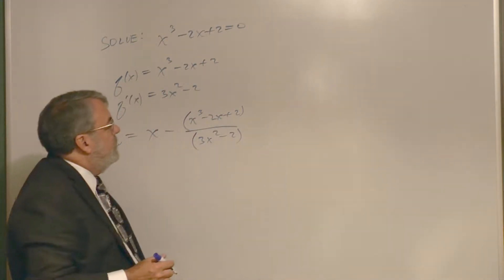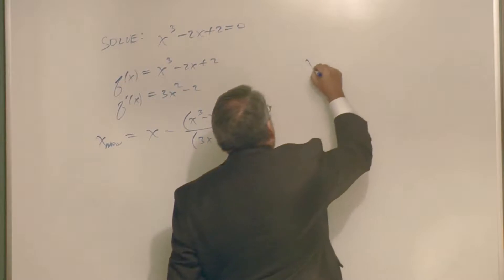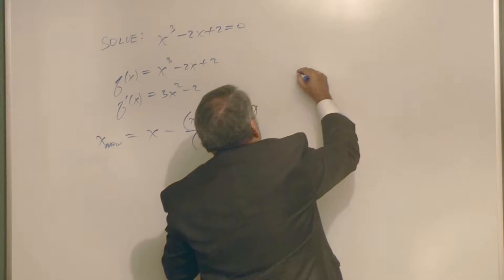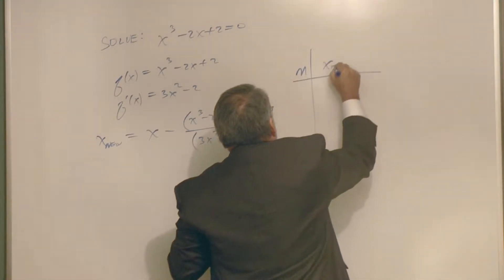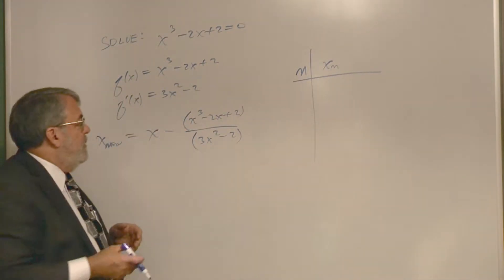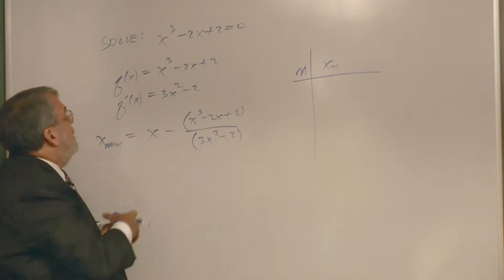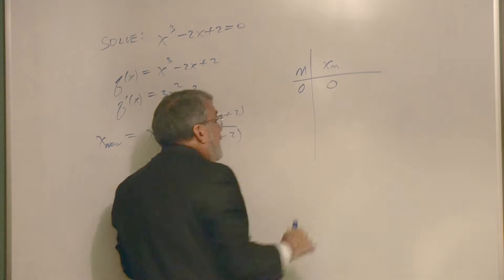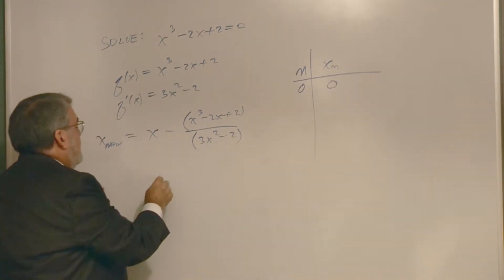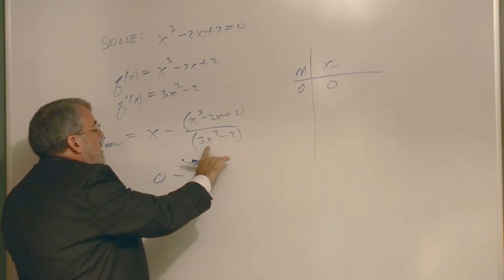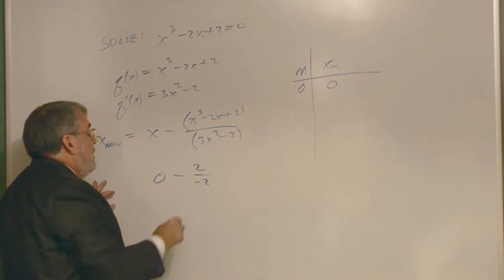Here's what they show. This is n and x_n. It turns out if you started with 0 as your first term, then if your first guess is 0, plug 0 into here. You'll get 0 minus those are 0s minus 2 over 0 minus 2, negative 2. Well those two negatives cancel, I get 0 plus 1, I get 1.